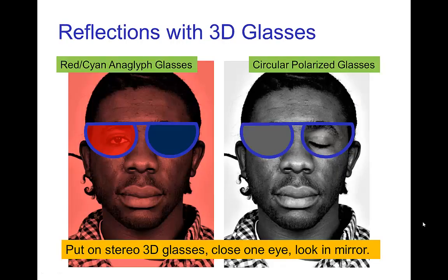An interesting effect to try with 3D glasses: if you wear anaglyph glasses and look in the mirror, closing one eye means you'll see your open eye through the glasses, while the closed eye's lens looks black. If you repeat this with circular polarized glasses, it's reversed — the open eye's lens looks black and the closed eye's lens looks clear. You can see through the lens even though its reflection looks black, because the mirror inverts the circular polarization of the light.